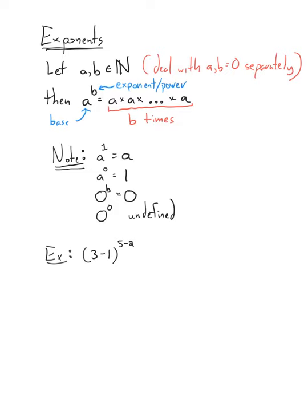The only weird thing is: what if you have 0 to the power of 0? One rule says anything to the power of 0 is 1, but another says 0 to any power is 0. You can use ideas from calculus to show that 0 to the power of 0 can equal anything, so we say it's an undefined quantity — it just doesn't have any meaning.